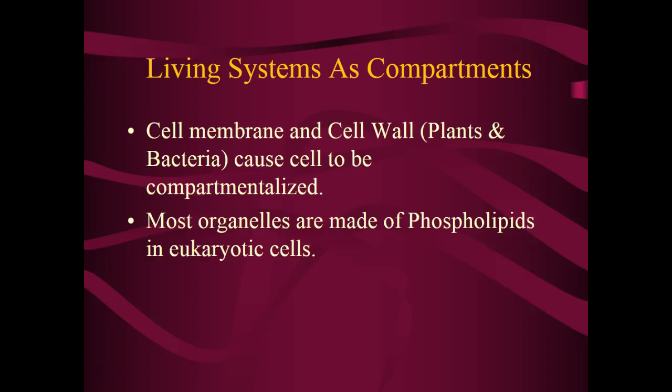Hello there, Mr. P here, and today is Chapter 7, Lecture 7. In this lecture we're going to talk a little bit about cell membranes, what it means to be a membrane, how the membrane acts, how it's structured, and how that structure allows for compartmentalization, specifically in a eukaryote — meaning how organelles came to be, how organelles can have specific functions, and what the membrane does for the cell. Okay, so let's get started.